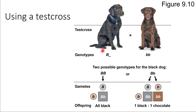If, on the other hand, this parent dog is heterozygous — capital B, lowercase b — then during meiosis those alleles would segregate, and the brown dog can only contribute lowercase b. So the possible combinations are heterozygous offspring or homozygous recessive offspring. In this case, half the offspring would be black and half would be brown. So based on the outcome of the cross, just by looking at the color of the pups, we can figure out what the genotype of this dog is. That's called doing a test cross.